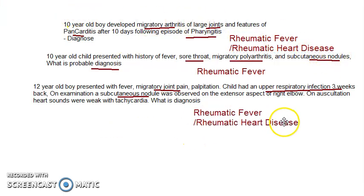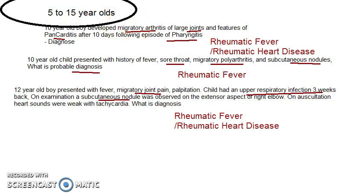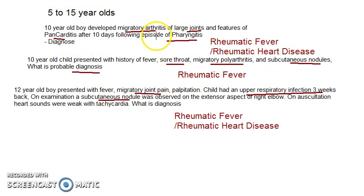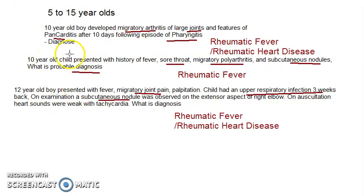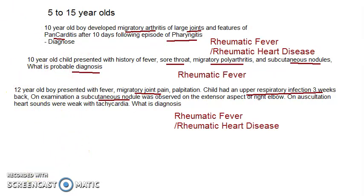A quick correction: it is 5 to 15 year olds who are more commonly affected, not just 5 to 10. In these exam cases, the ages given were 10, 10, and 12 — all falling within that high-incidence range.